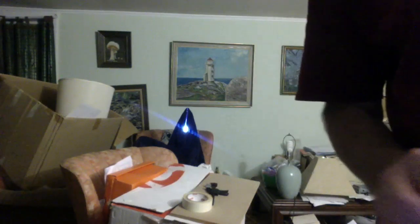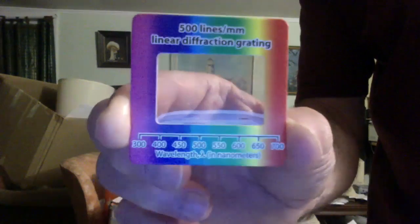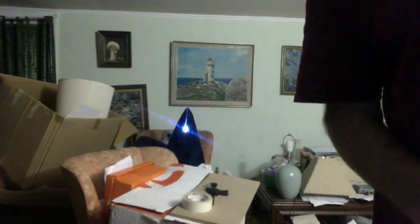Let's go over how to find the wavelength of light using our diffraction grating. It's 500 lines per millimeter and the light bulb over there.